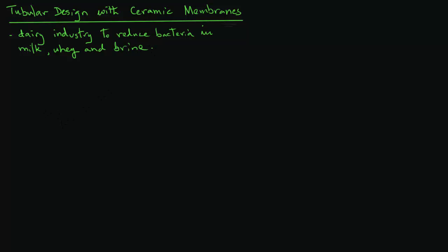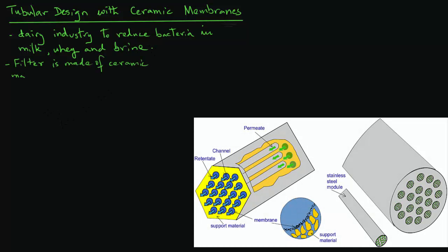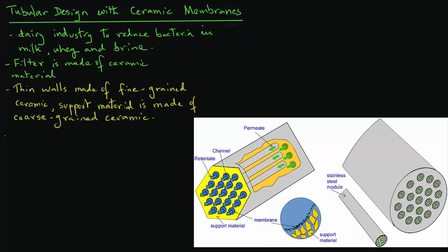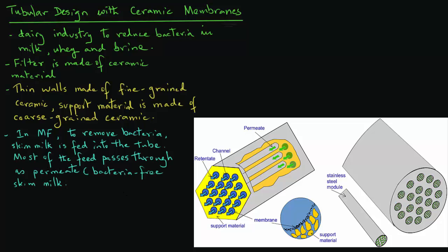The filter is made of ceramic material, where the thin walls are made of fine-grained ceramic, and the support material for those thin walls is made of coarse-grained ceramic. When this arrangement is used for microfiltration to remove bacteria, skim milk is fed into the tube. Most of the feed passes through as permeate, which will be bacteria-free skim milk, and the retentate will contain the bacteria.